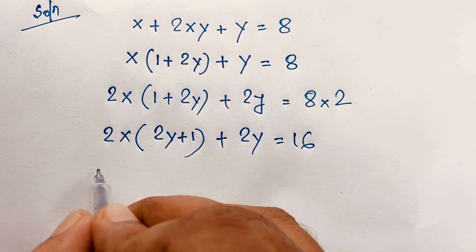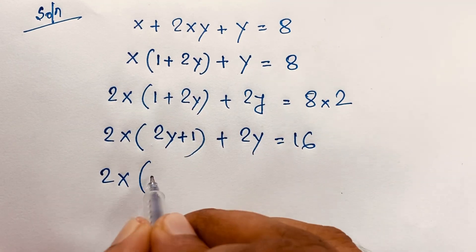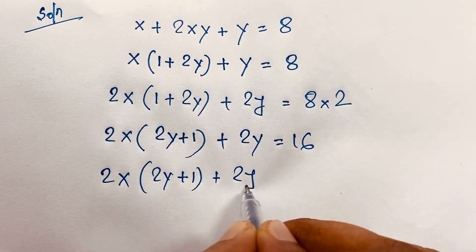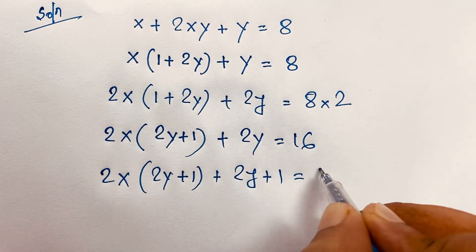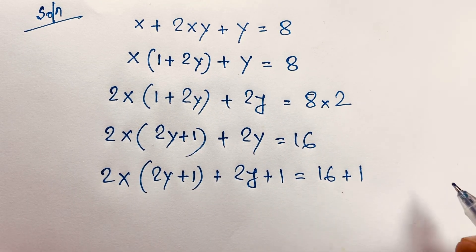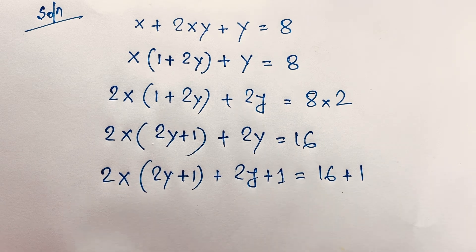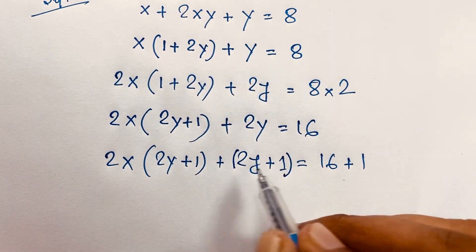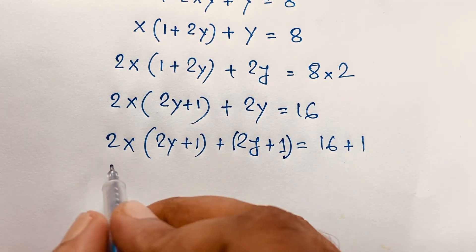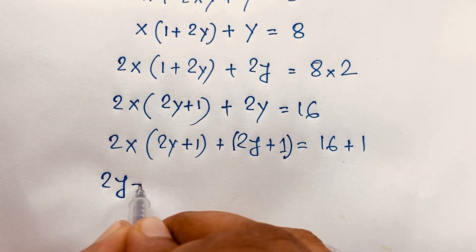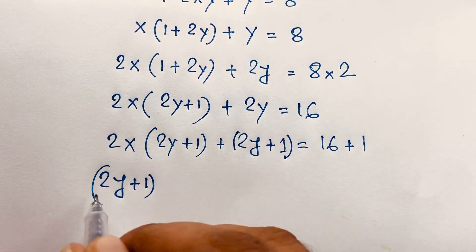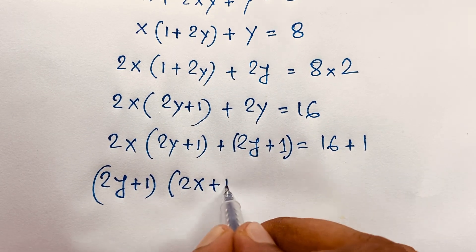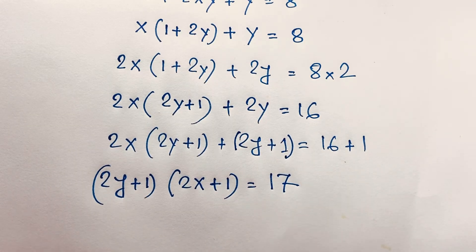Then I add both sides by 1. So this expression is 2x times (2y plus 1), then 2y plus 1 is equal to 16 plus 1. I add both sides by 1. You can see easily this is 2y plus 1 and this is 2y plus 1. So 2y plus 1 is common. If I take 2y plus 1 as common, this divided by this will be 2x, and this divided by this plus 1, is equal to 17.